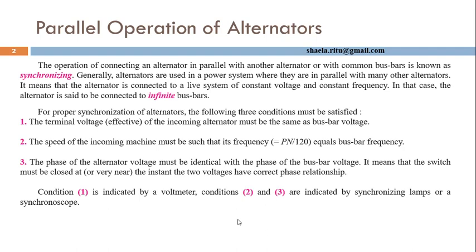What is an infinite bus? Basically, an infinite bus is a collection of lots of generators. For example, the power grid of Bangladesh is an example of an infinite bus. We also have northern power grid, western power grid, etc. These power grids are all examples of infinite bus. The grid area has its own power stations and alternators, and all of them run in parallel. So, infinite bus is a collection of generators working in parallel.